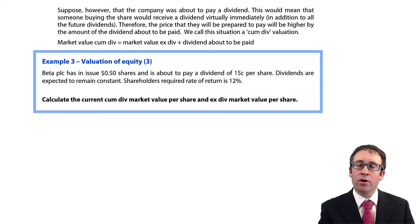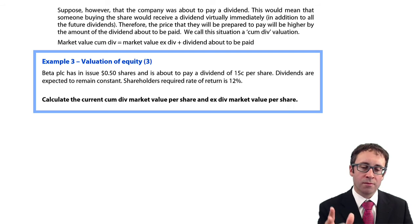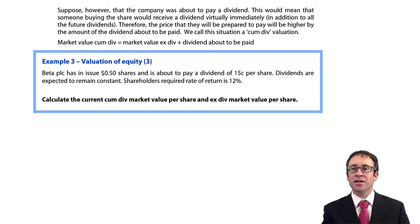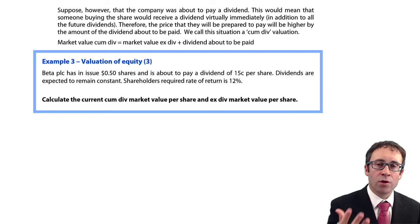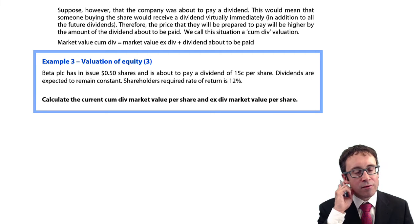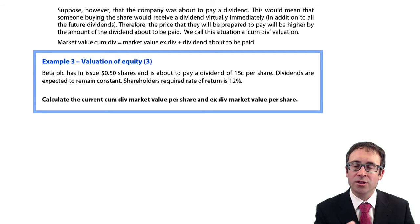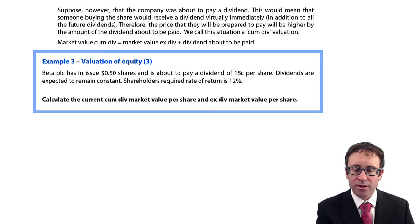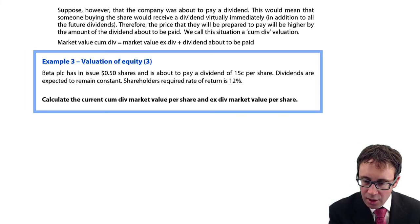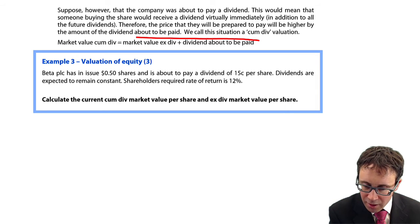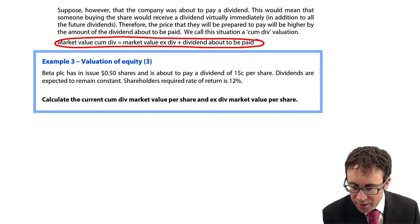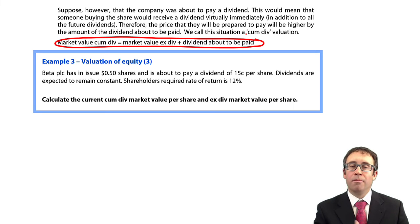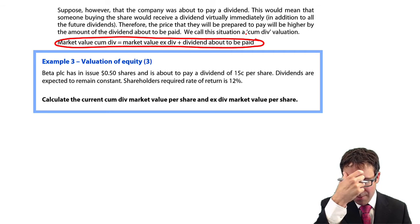However, what you will recall from the days of F1, there was that difference between the CumDIV and the XDIV. The CumDIV incorporates the value of the dividend about to be paid — so it has not yet been paid. Once it is paid, the CumDIV price will fall down to the XDIV price, which gives us the formula: CumDIV equals XDIV plus the dividend about to be paid.